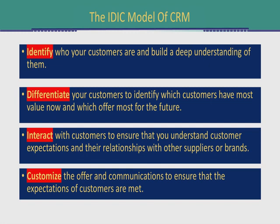To summarize, the IDIC model: 'I' is to identify who your customer is; 'D' is to differentiate your customers; the second 'I' is to interact with your customers for better understanding; and 'C' is the customization of the offer for your customer — so that you can achieve customer satisfaction and meet their expectations.